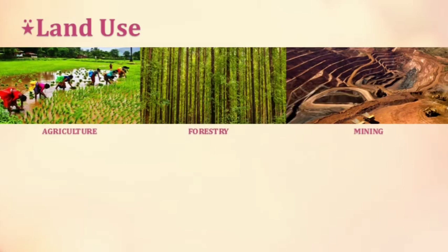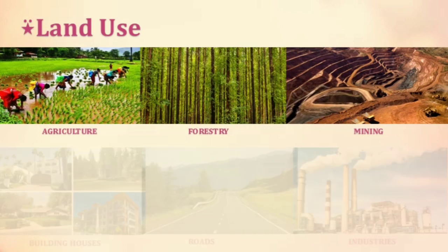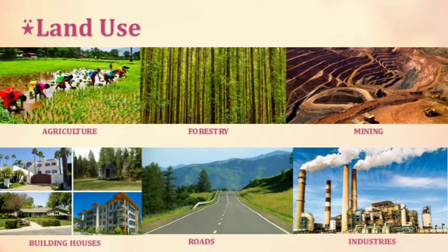Now we shall look at the land use. Land is used for different purposes such as agriculture, forestry, mining, building houses, roads and setting up of industries. This is commonly termed as land use.